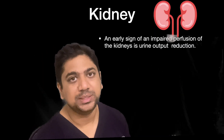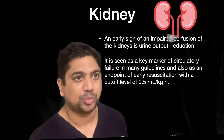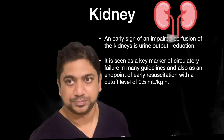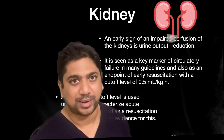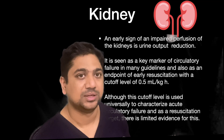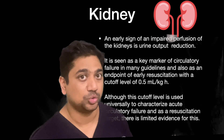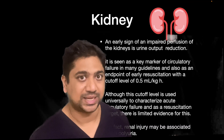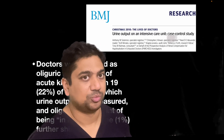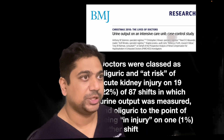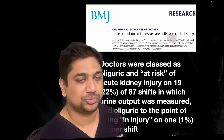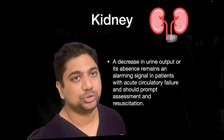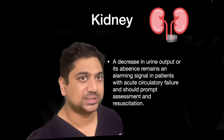An early sign of impaired kidney perfusion is decreased urine output. The traditional value of 0.5 ml/kg/hour has been established as a marker of good hemodynamic resuscitation and a marker for acute kidney injury. However, this marker is not well established in the literature, and we have not seen robust studies confirming that achieving this urine output ensures good outcome. Notably, acute kidney injury in its initial phases can actually be associated with polyuria.